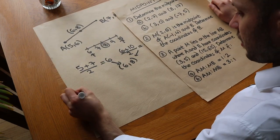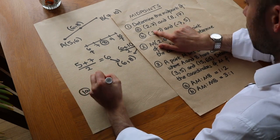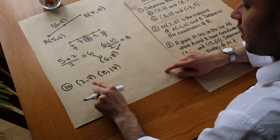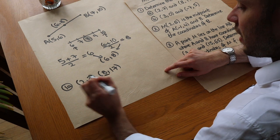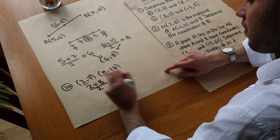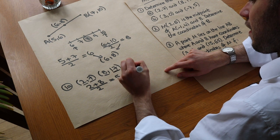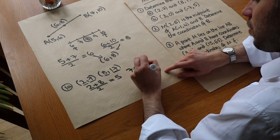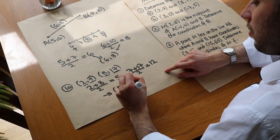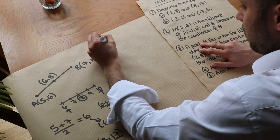Let's use that method for these questions. We don't need to draw it if we know this method. So 1a: the midpoint of (2, 7) and (8, 17). Finding the mean of the x values — 2 plus 8 divided by 2 — that is 5. Then for the y values, 7 plus 17 divided by 2, that's 24 divided by 2, which is 12. So we get the midpoint (5, 12). You could have done that in your head with these particular values if your mental arithmetic is good.